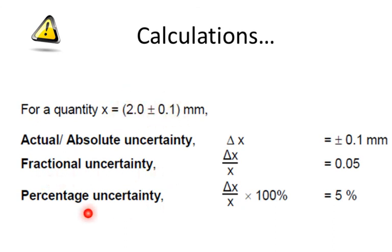Finally, the percentage uncertainty is the absolute uncertainty divided by the quantity that you've measured times by 100. So in this case, it is 5%.